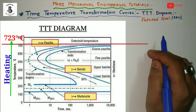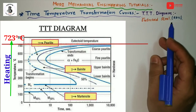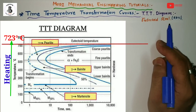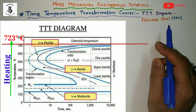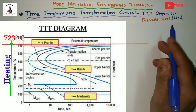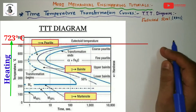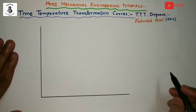You will study eutectoid steel at different temperatures with respect to time, to find out which kind of transformation occurs. Let's start to construct the TTT diagram for eutectoid steel.